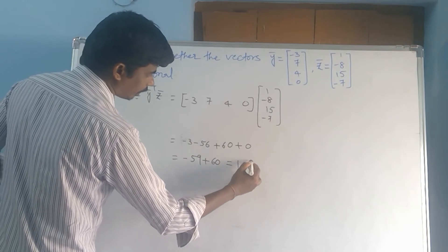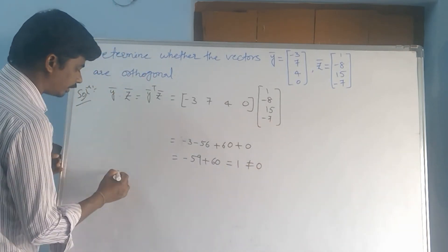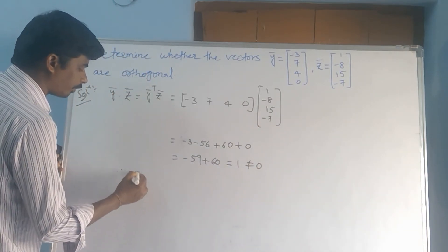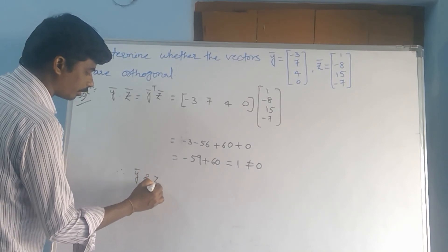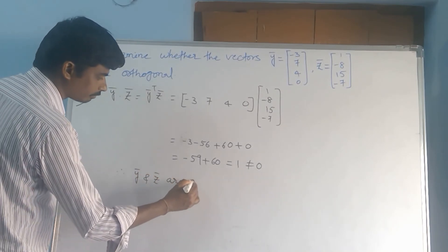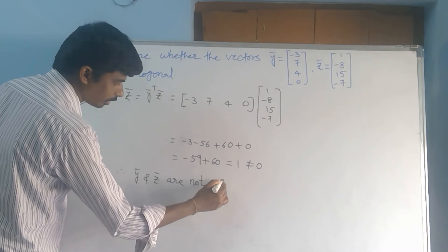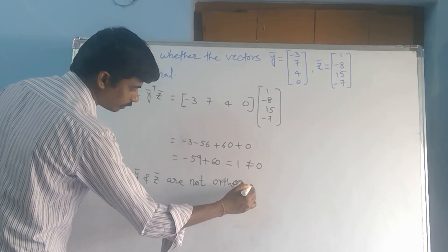That equals 1, not equal to 0. So, therefore, y bar and z bar are not orthogonal.